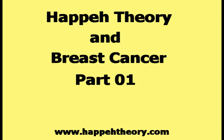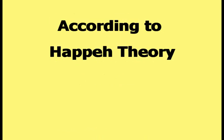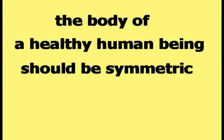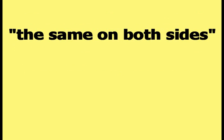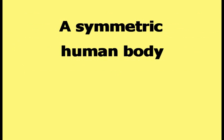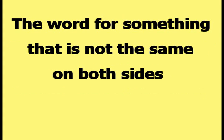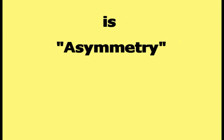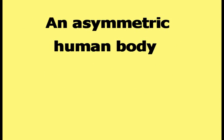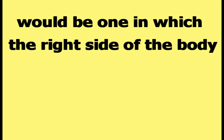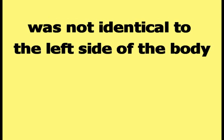This video is part one in a series on Happy Theory and Breast Cancer. According to Happy Theory, the body of a healthy human being should be symmetric. The word symmetry means the same on both sides — a symmetric human body would be one in which the right side is identical to the left side. The word for something that is not the same on both sides is asymmetry, meaning the right and left sides are not identical.